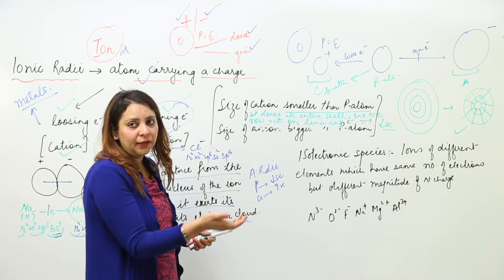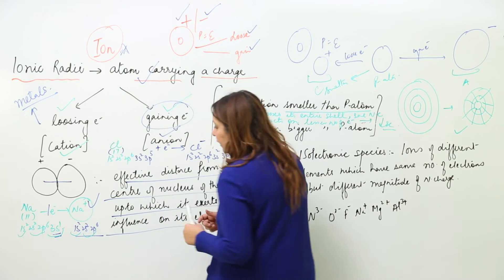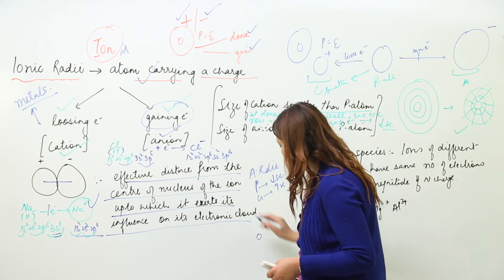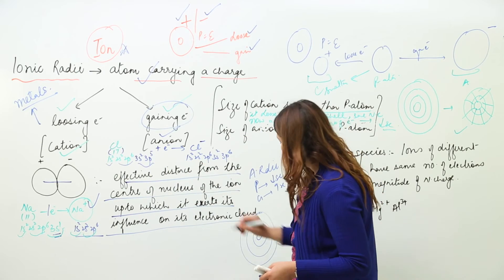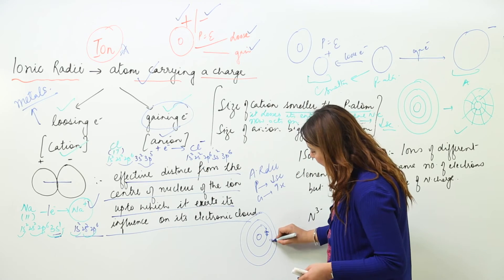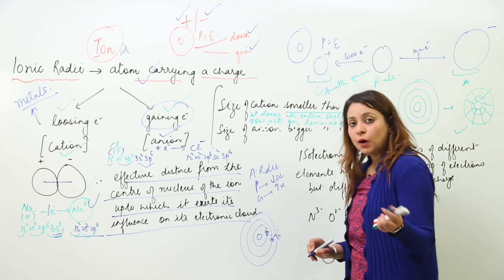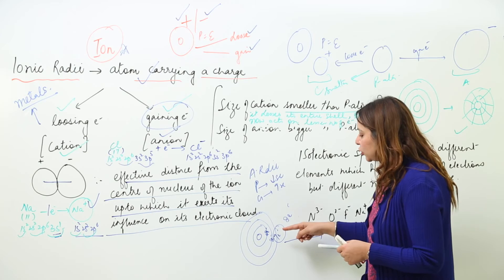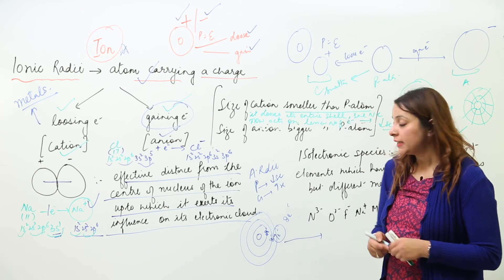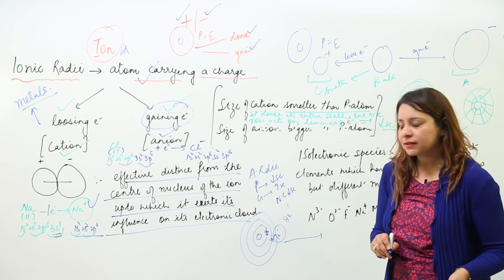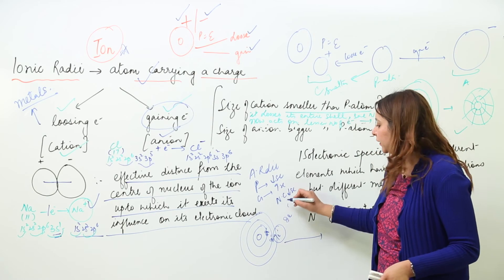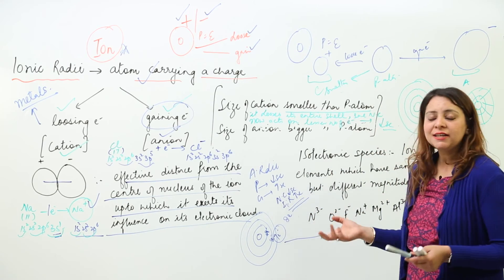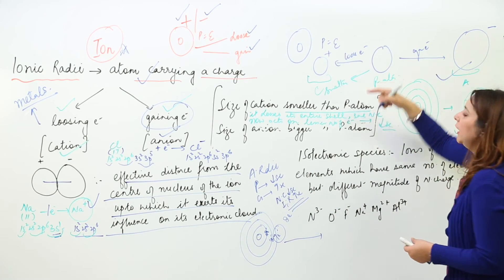For anions, chlorine has three shells — 2, 8, and 7 electrons. When it gains one electron, the third shell goes from 7 to 8 electrons. The same nuclear charge now acts on more electrons. Moreover, due to the addition of an electron to the same shell, inter-electronic repulsions increase, which makes the size bigger. That is why anions are bigger than the parent atom.